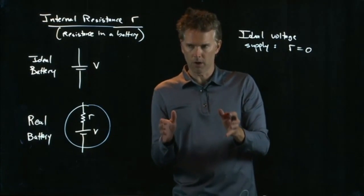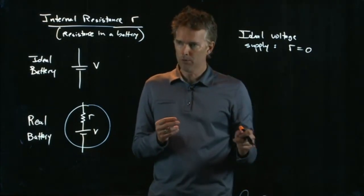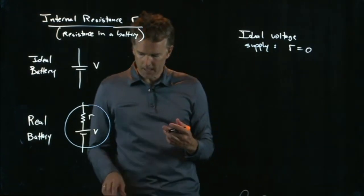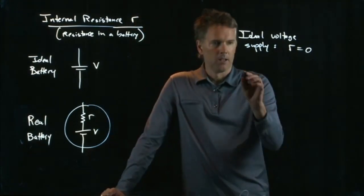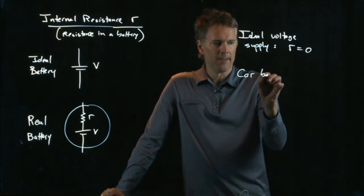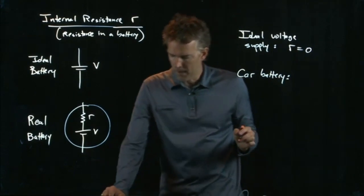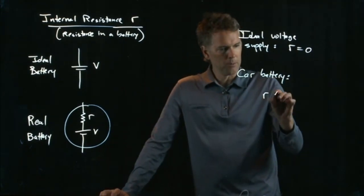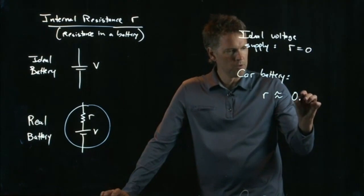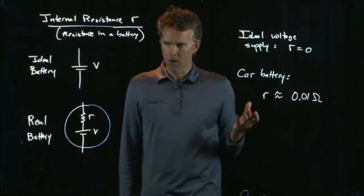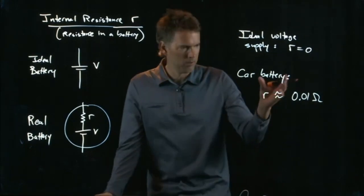Your 12 volt car battery, if you attach loads to it, it's still going to be 12 volts. But in reality, r is never zero. And for a car battery, r is approximately 0.01 ohms. It's something pretty small, but it is still real.